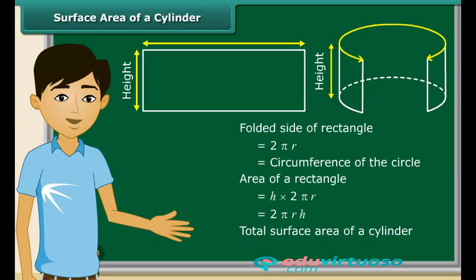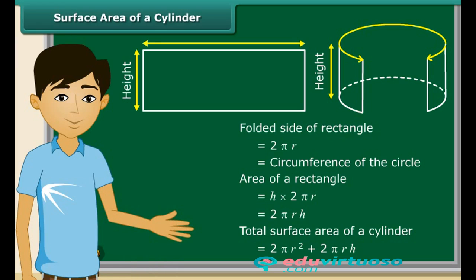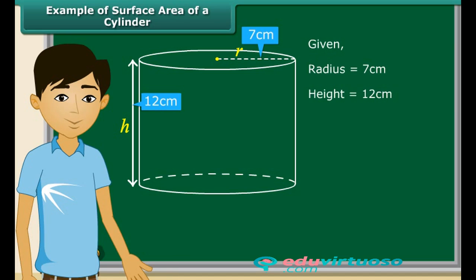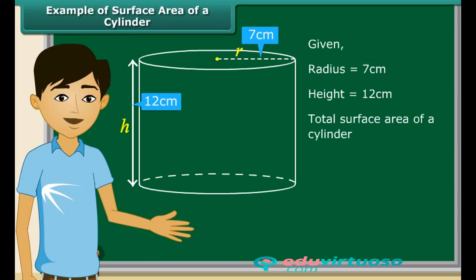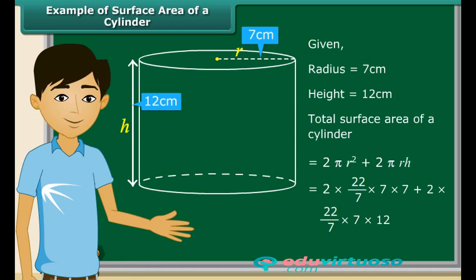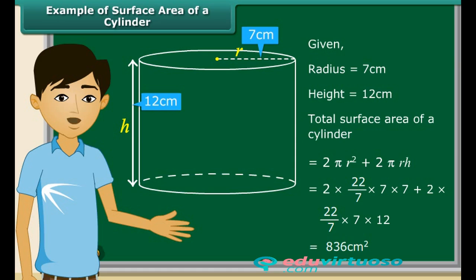Therefore, the total surface area of a cylinder is equal to 2πr² + 2πrh. Let us find the surface area of a cylinder with radius equal to 7 centimeters and height equal to 12 centimeters. Substituting the values: 2 × (22/7) × 7 × 7 + 2 × (22/7) × 7 × 12. This gives the surface area of this cylinder equal to 836 square centimeters.